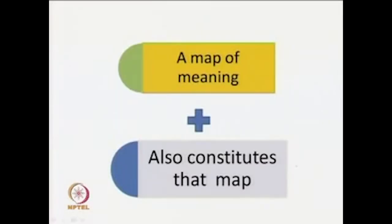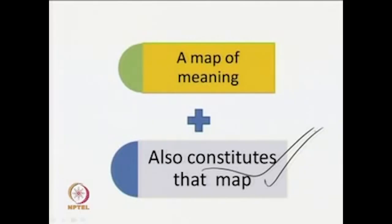Ultimately, representation is a map of meaning — we have talked about representation being a map of meaning and pointers to meaning. But the second point, often reiterated by theorists of cultural studies, is that representation also constitutes that map. It is like the recto and verso sides of a piece of paper — you cannot separate them; both sides are constitutive of the piece of paper. In the same way, representation also constitutes those very maps of meaning; it is not simply a pointer to meaning.